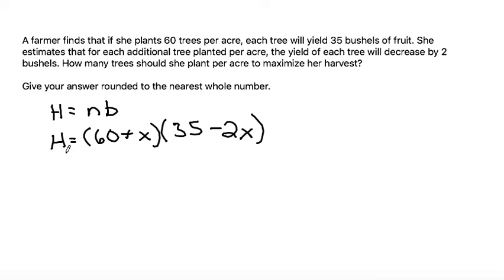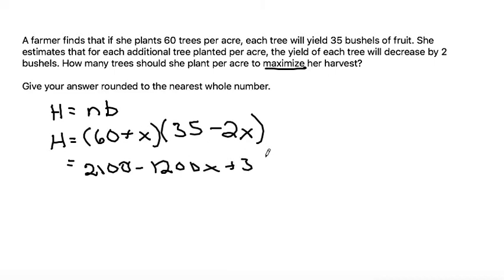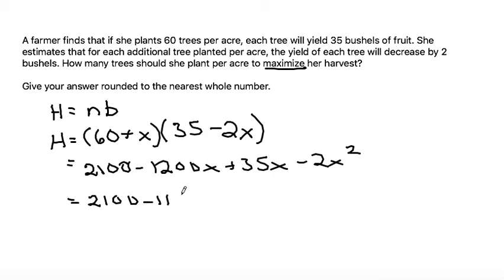So our equation is H = (60 + x)(35 - 2x). To figure out the maximization, let's first distribute and then find our derivative. Doing FOIL: 60 times 35 is 2100, outer is minus 120x, inner is plus 35x, and last is minus 2x squared. Simplifying: 2100 plus (-120 + 35)x minus 2x squared.